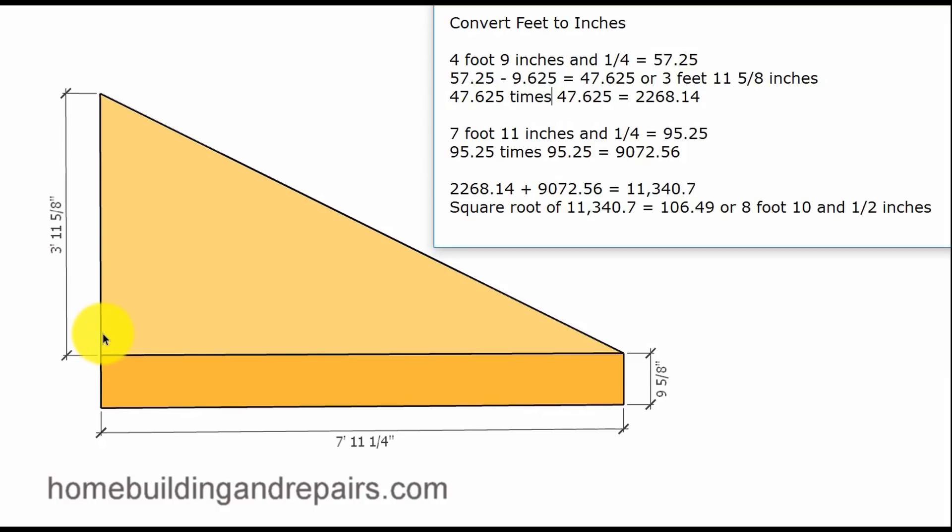Now the Pythagorean Theorem, this also needs to be a 90 degree or a right angle for it to work also. So what we are doing is multiplying these two numbers together after we convert them to decimals which is what we're going to do next.